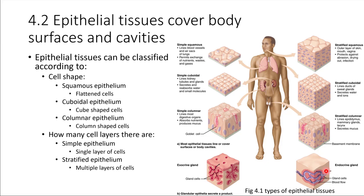One more thing to note about stratified epithelium: it is very good at protecting things. Think of your skin — it has many layers of cells, so if the top layer gets abraded off, you still have many more layers providing protection. Simple epithelium, on the other hand, is more delicate and not as good for protection against abrasions, but it is very good for functionality like diffusion or producing mucus.